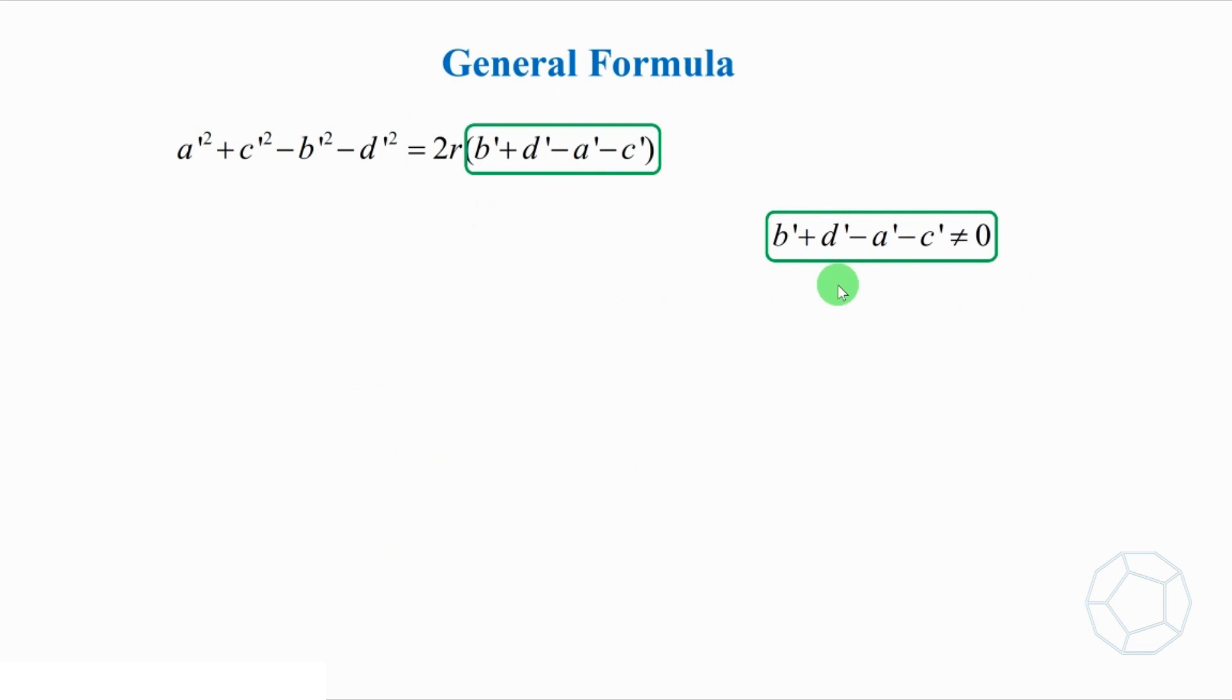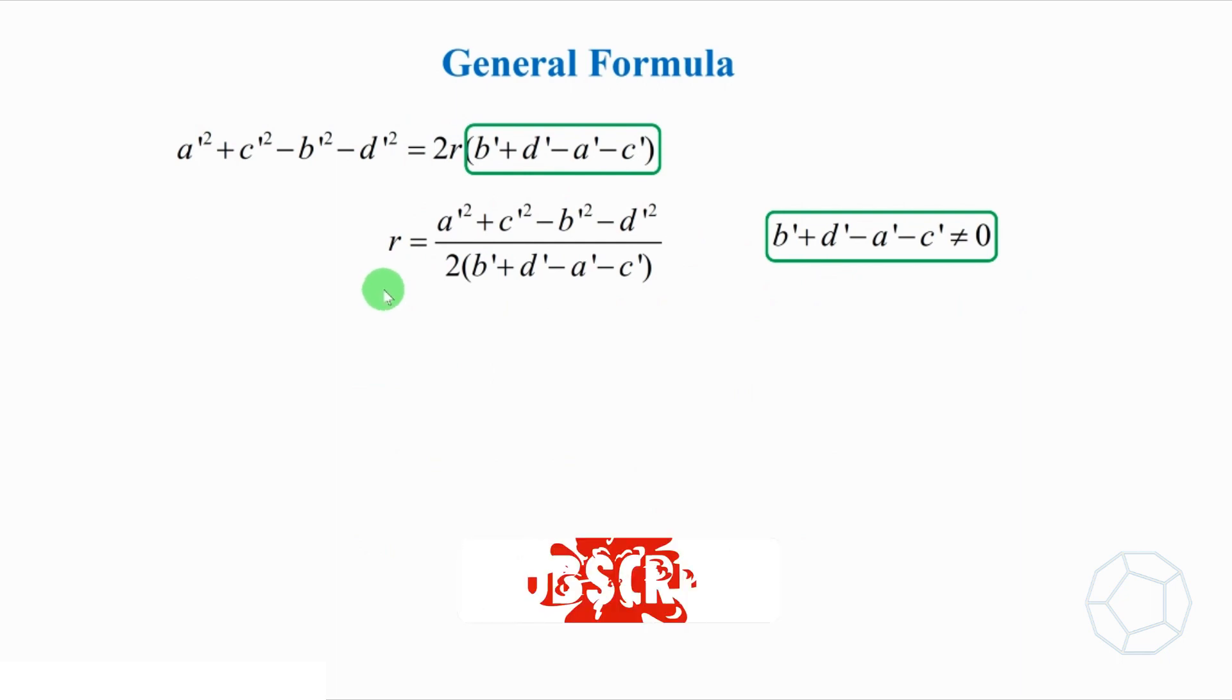Then, to find the radius of the circle, we divide 2 and this bracket to the left-hand side. However, it should be non-zero. Otherwise, it is undefined. Now, we get the general formula: r = (a'² + c'² - b'² - d'²) / (2(b' + d' - a' - c')).